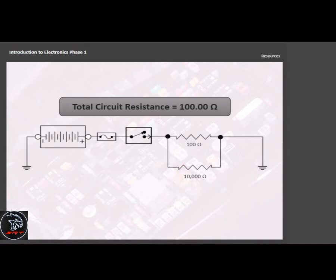However, adding a 10 ohm resistor in parallel to the same 100 ohm circuit has a greater effect. The total circuit resistance changes by over 90 ohms.